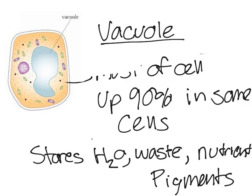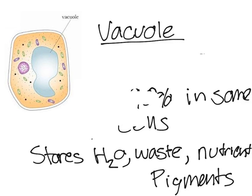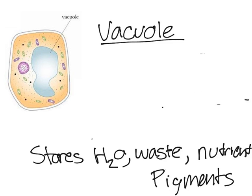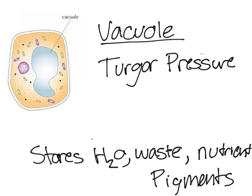The vacuole has one more function: it regulates turgor pressure of the cell. Turgor pressure is the pressure that pushes the plasma membrane against the cell wall. It essentially determines if the cell is turgid, flaccid, or shriveled up.